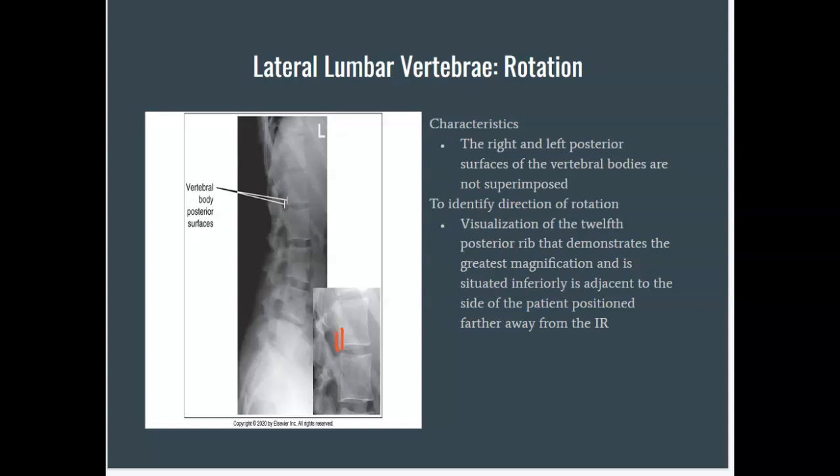A couple of reasons I know this: we can see the 12th rib coming down as a small shadow, and it is rotated posteriorly, coming out from the back end. We're also seeing the posterior surface of our L-spine, and the reason we see it is because it's getting closer to the IR as we rotate posteriorly, allowing us to visualize it. You'll see in the next projection the difference.